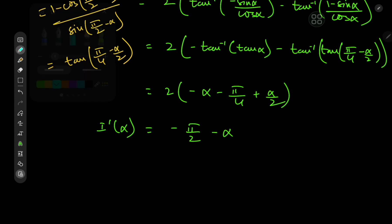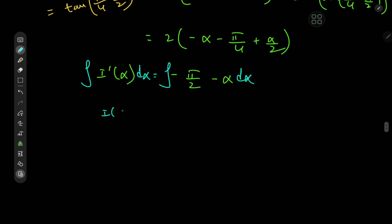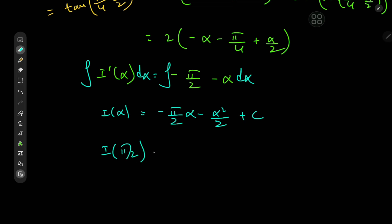Since integration is now trivial, we integrate with respect to α. We get I(α) equal to negative π/2 times (α minus α squared / 2) plus a constant of integration C. To determine C, we use the initial value condition I(π/2).